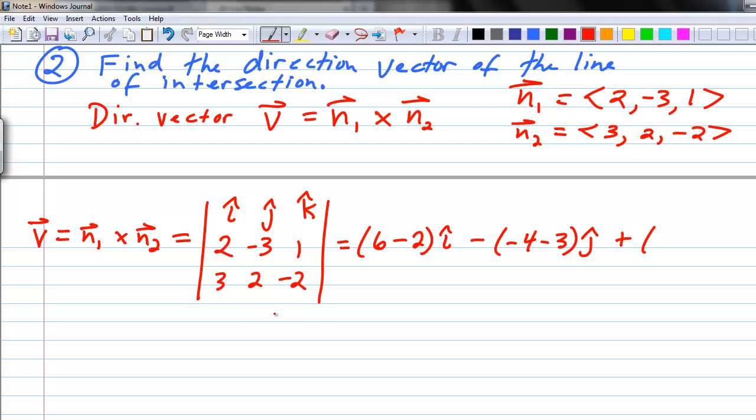Plus, so it's plus, minus, plus. Then we cross off the k column and we're going to get 2 times 2, which is 4, minus 3 times negative 3, which is negative 9, k. Let's simplify this. 6 minus 2 is 4i. We have negative 7 here, but it's a negative in front, so plus 7j. And then we have 4 minus a negative 9, or 4 plus 9, plus 13k. Here we have our direction vector for the line of intersection.